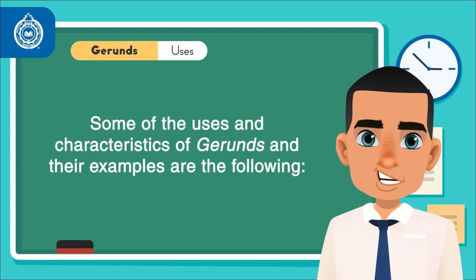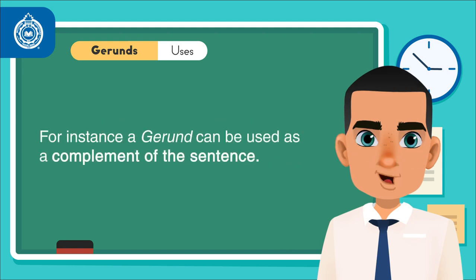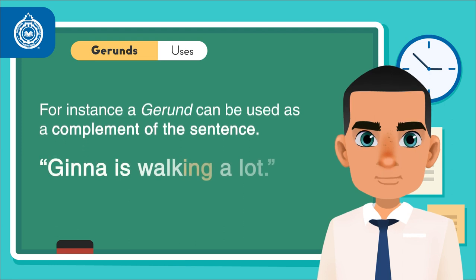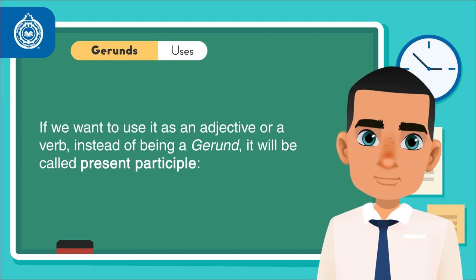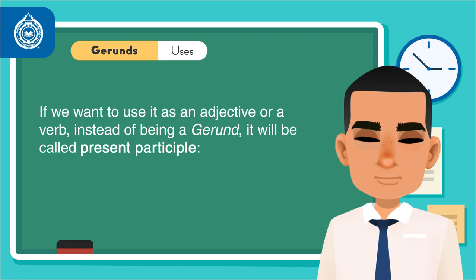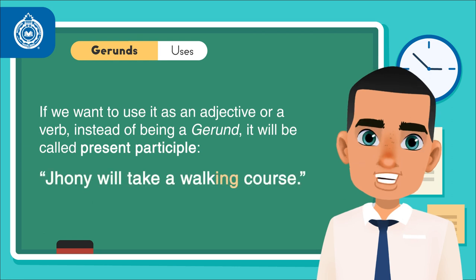Some of the uses and characteristics of gerunds and their examples are the following. For instance, a gerund can be used as a complement of the sentence. Example: Gina is walking a lot. Now, if we want to use it as an adjective or a verb instead of being a gerund, it will be called present participle. For instance, Johnny will take a walking course.